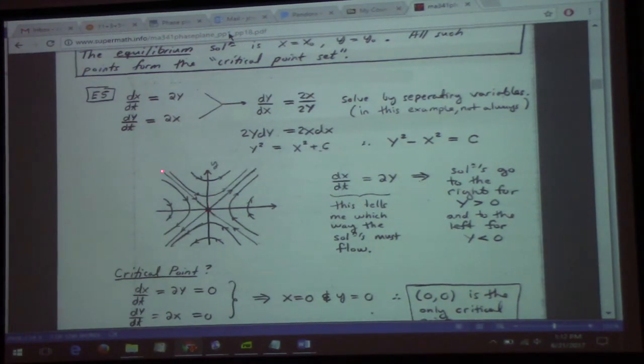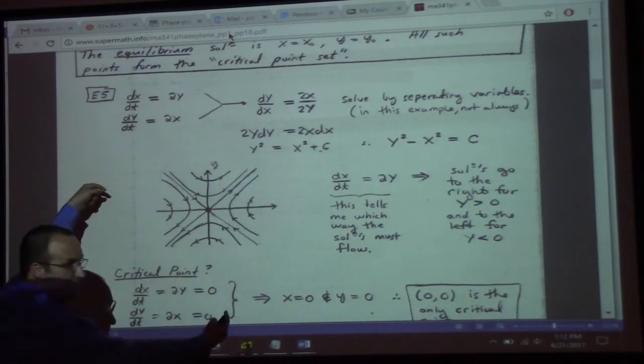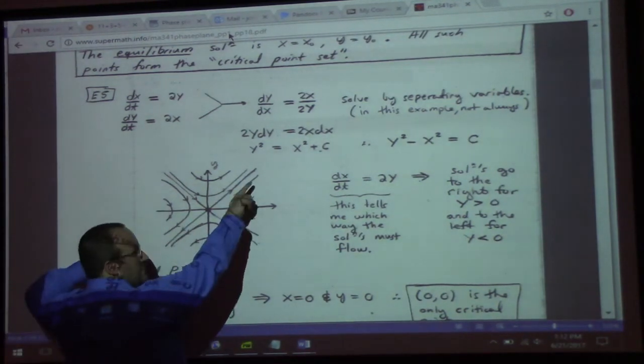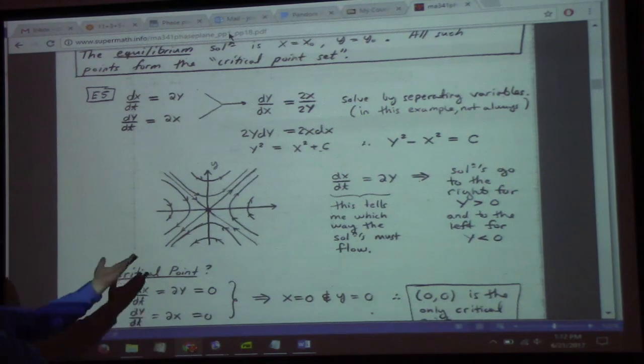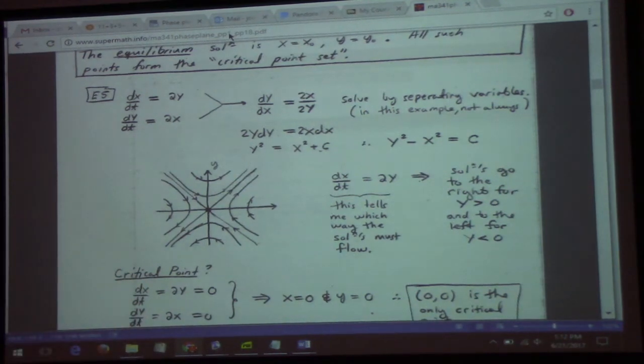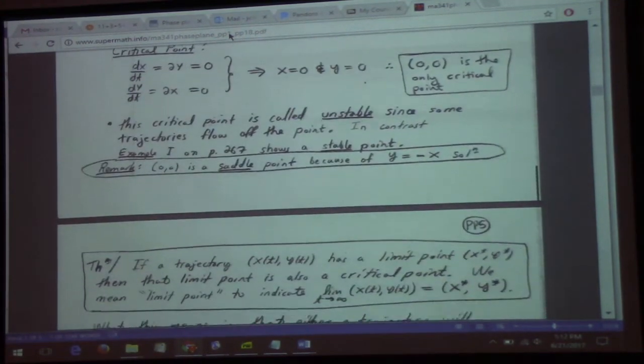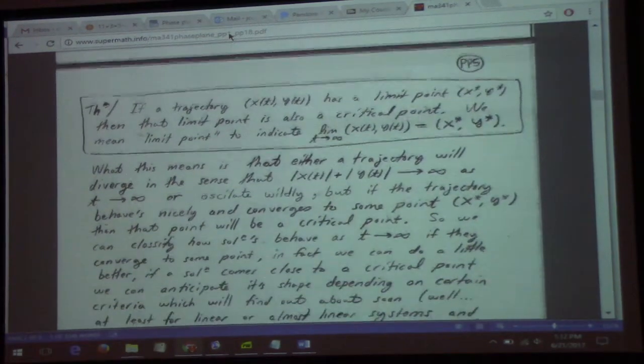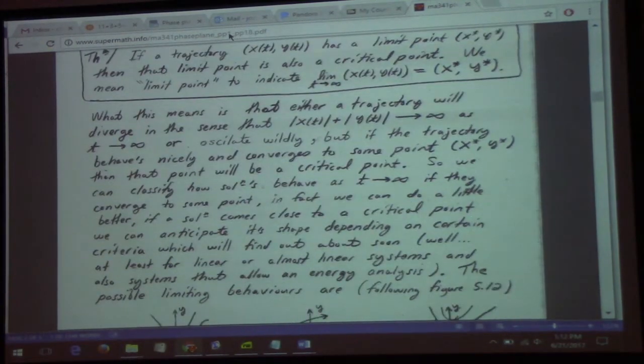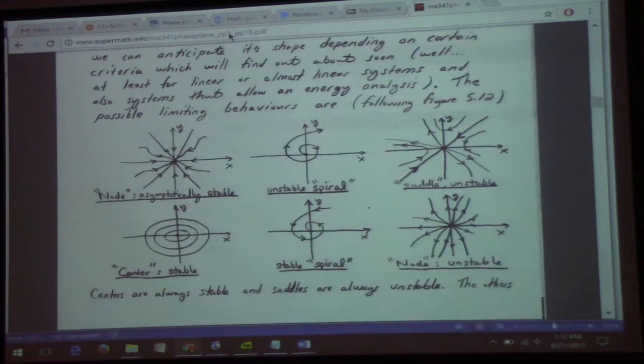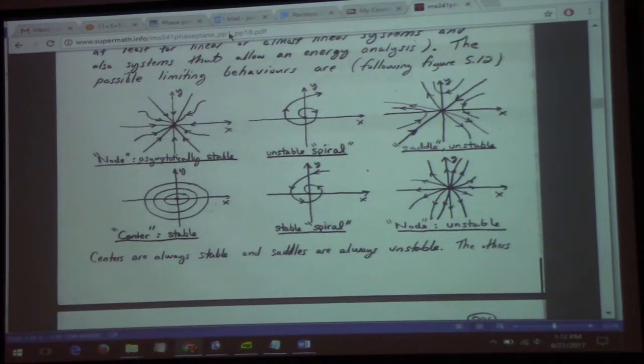You have some solutions flowing into the origin, some solutions flowing out. This is much like the example that we were just looking at in my notes. The origin's unstable. How about that circle one? If I'd drawn the picture for it, would it have been stable or unstable? What do you think? Here's the picture I was looking for. So here's generally what can happen for a system.